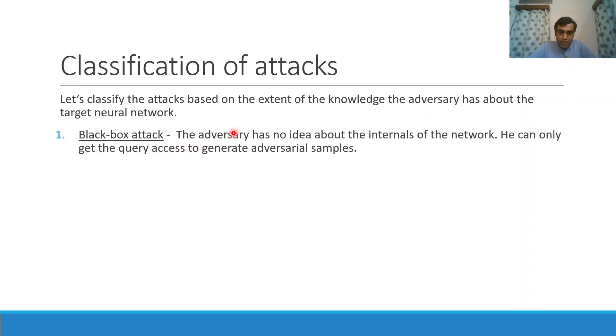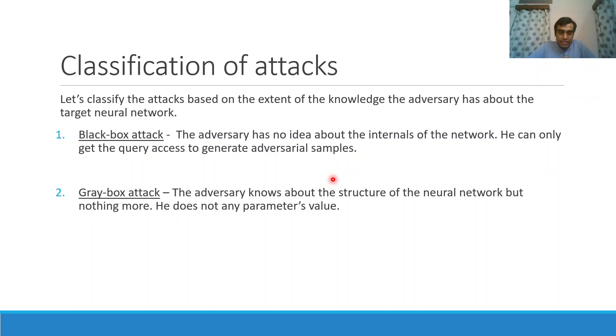First category is black box attack where the adversary has no idea about the internals of the network. He can only interact with the model in a query manner, like he can give some inputs and observe the corresponding outputs. Second category is gray box attack where the adversary knows at least the structure of the neural network. He may be knowing about the number of layers and number of neurons, but he does not know any of the parameters values or activation functions.